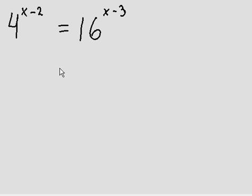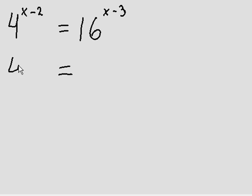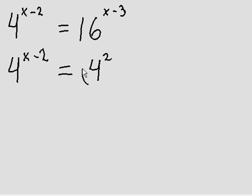So this side I'm going to keep — this 4 to the power of x minus 2, I'm just going to keep it just as it is, right there. And the 16 is just 4 squared now, 4 squared in brackets. And the x minus 3 remains there.